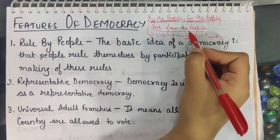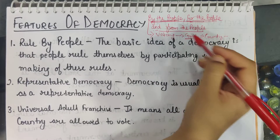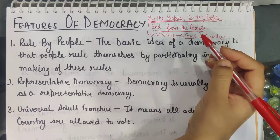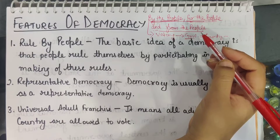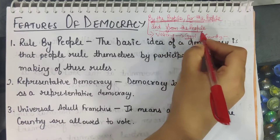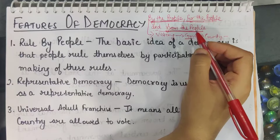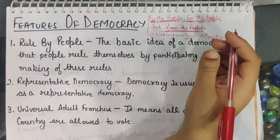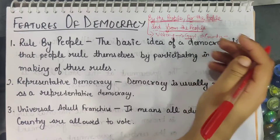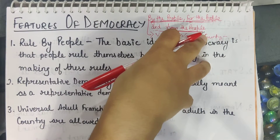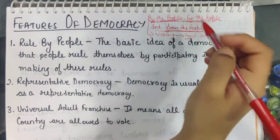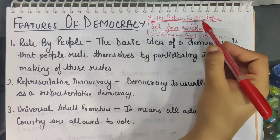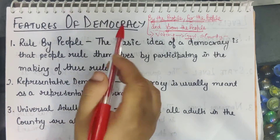And from the people — what does this mean? The people who are elected, the people who stand in elections, come from where? They are from us only. One of us is a part of our government. They don't come from any other place or any other country. They are a part of the country only. So a democracy is a government which is by the people, for the people, and from the people.